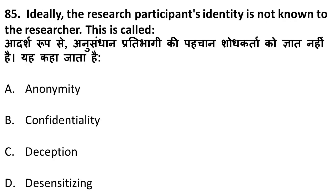Next question: ideally, research participants' identity is not known to the researcher — what is this called? When a researcher himself does not know the participants' identity, as in a Google Forms poll, it is called anonymity. Remember: when the researcher does not know the participant's identity, it is called anonymity or anonymous.